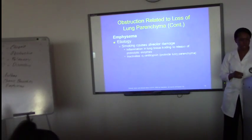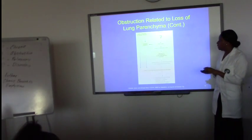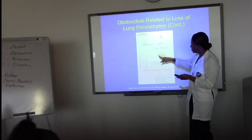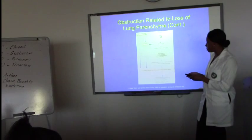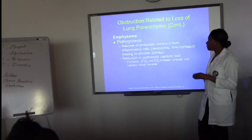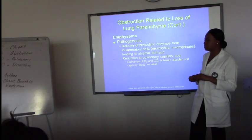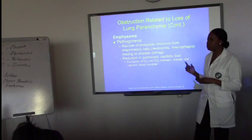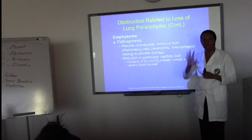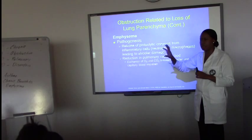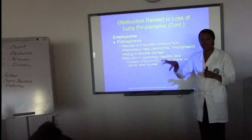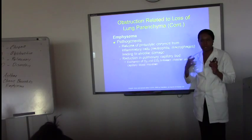Regarding alpha-antitrypsin and its protective role — there's a diagram you can look at at home showing cigarette smoke effects. Going again with the pathogenesis, these enzymes release inflammatory cells. Neutrophils and macrophages are part of this, leading to alveolar damage. These macrophages come to eat away the chemicals from cigarette smoke, but in doing so they're also eating away the normal epithelium that's supposed to stay there.